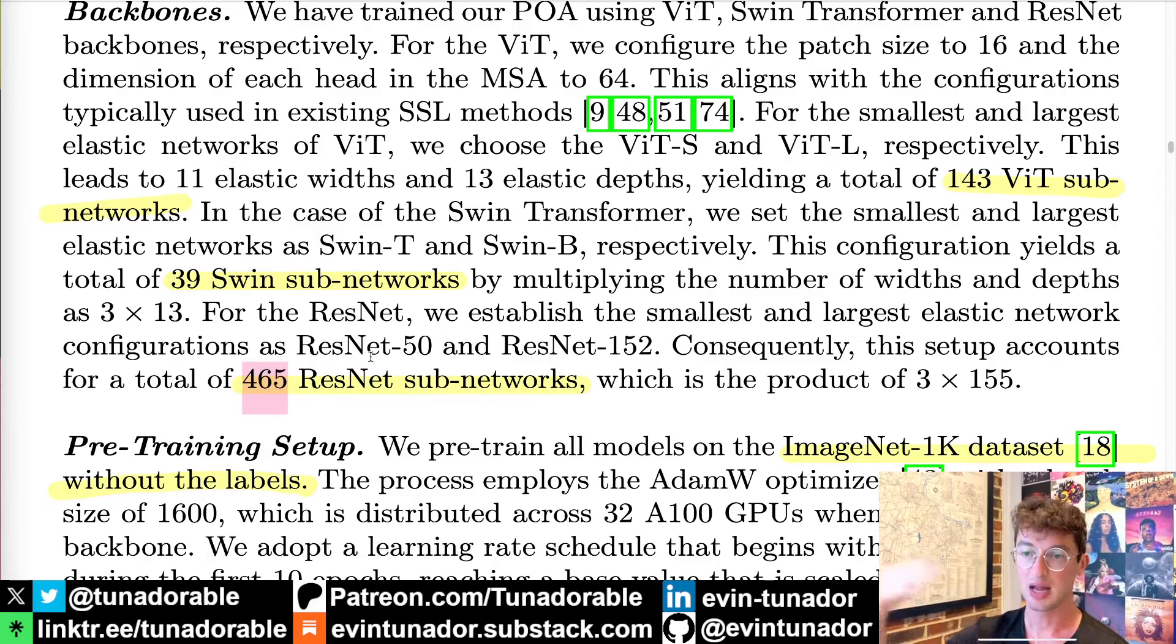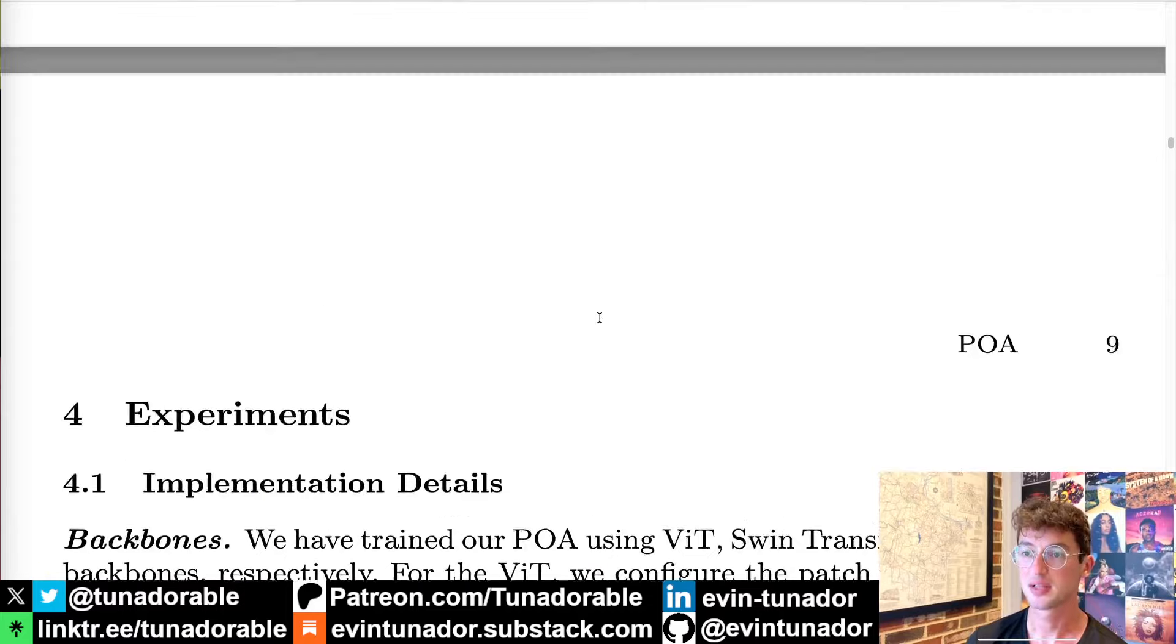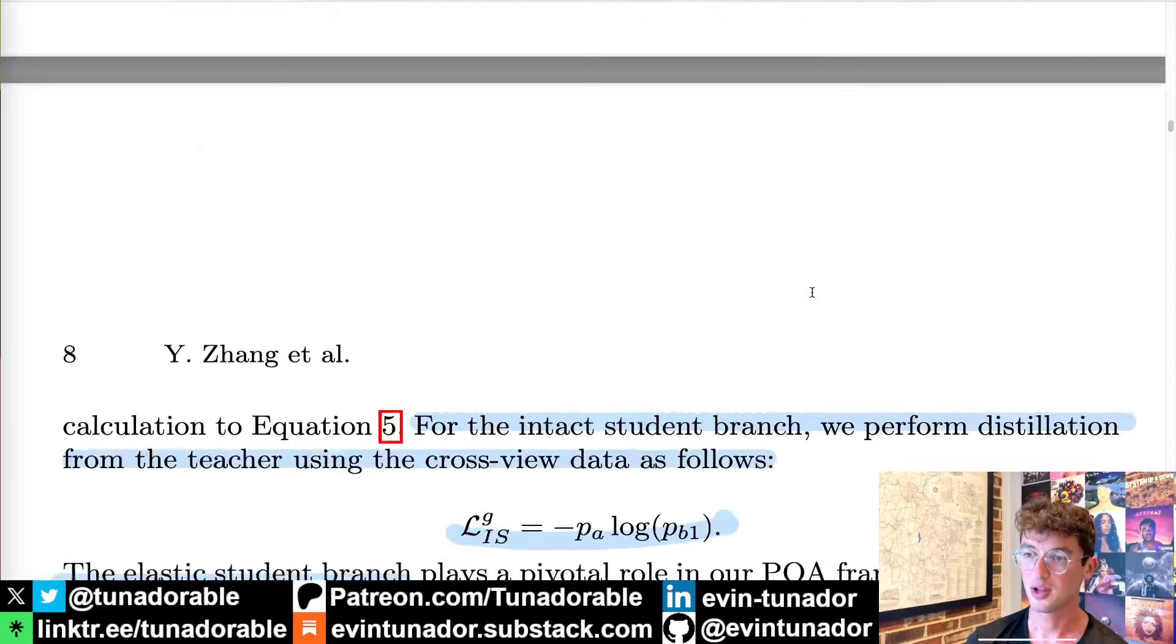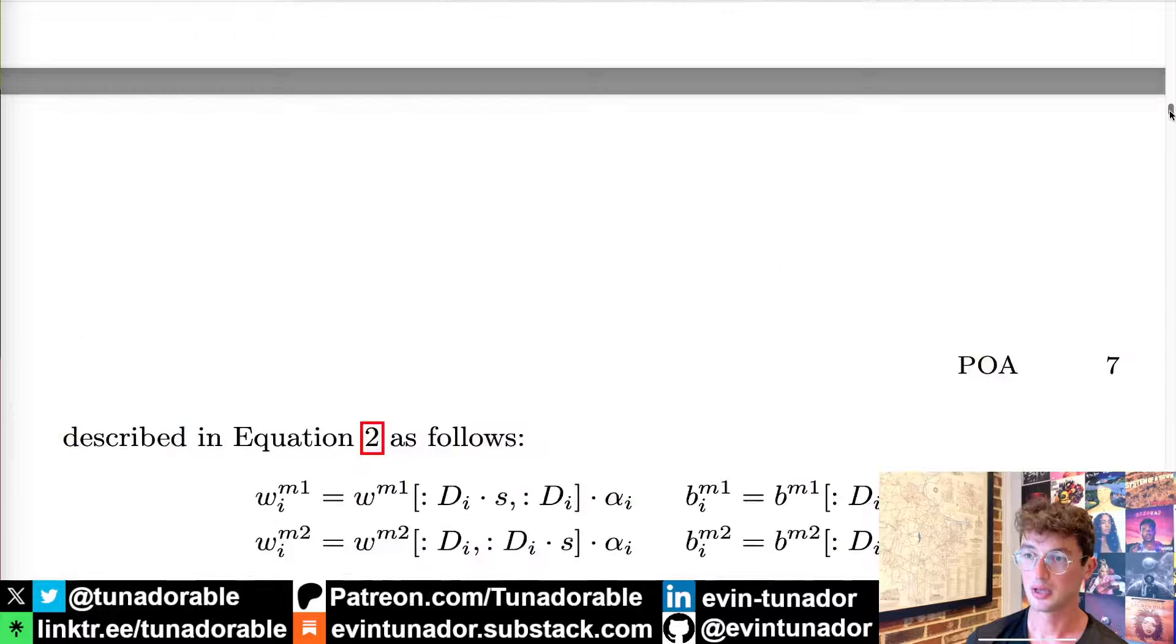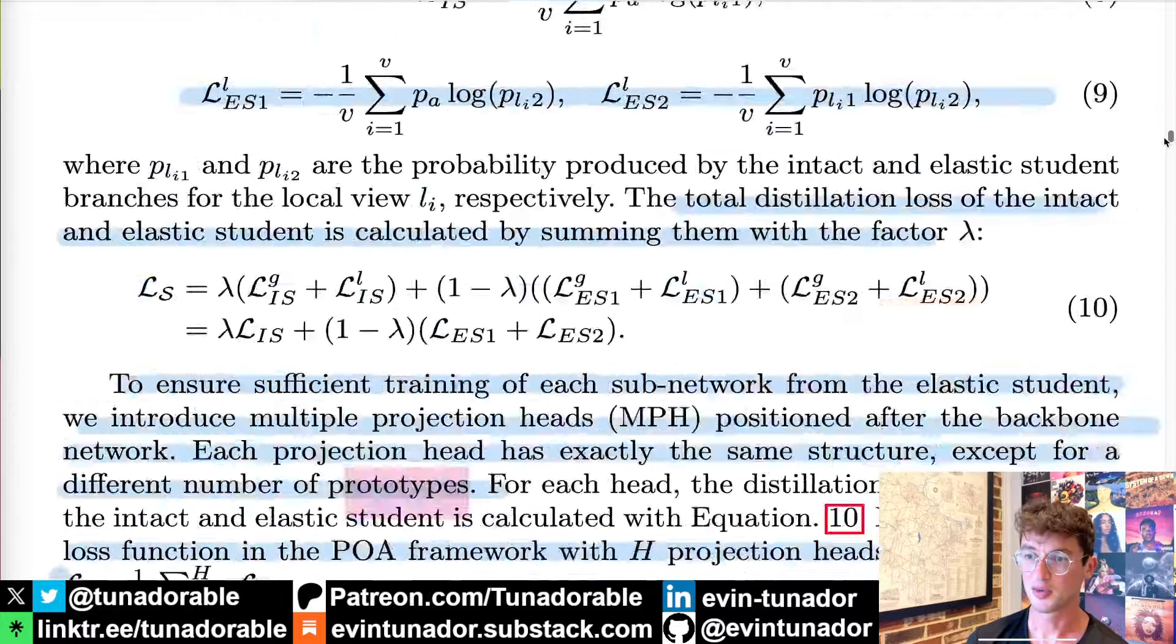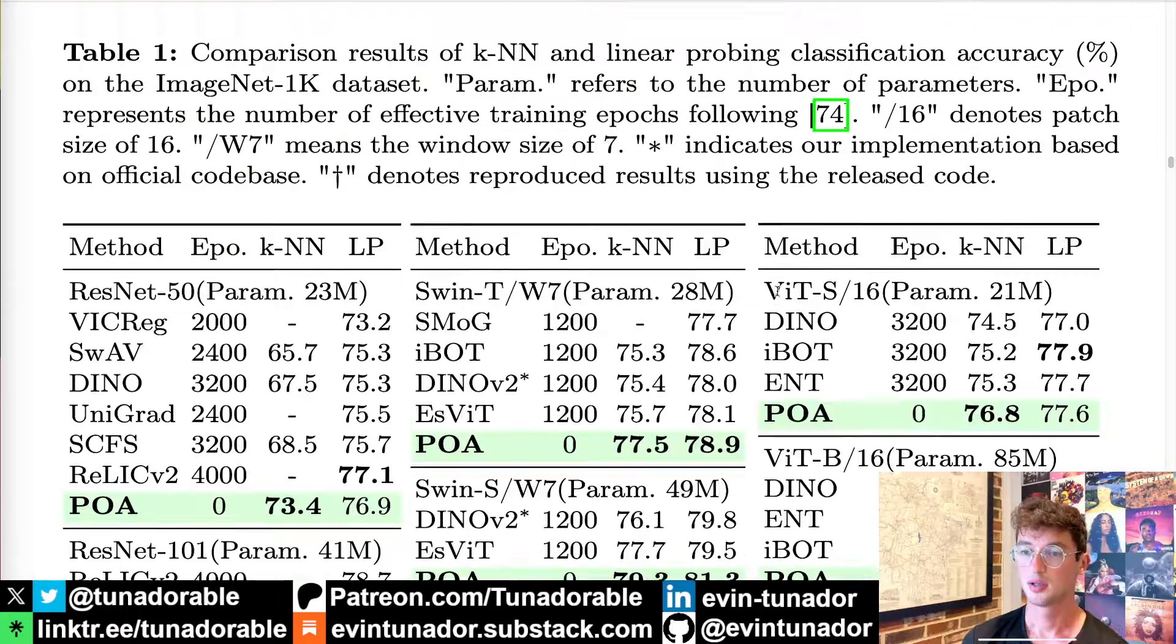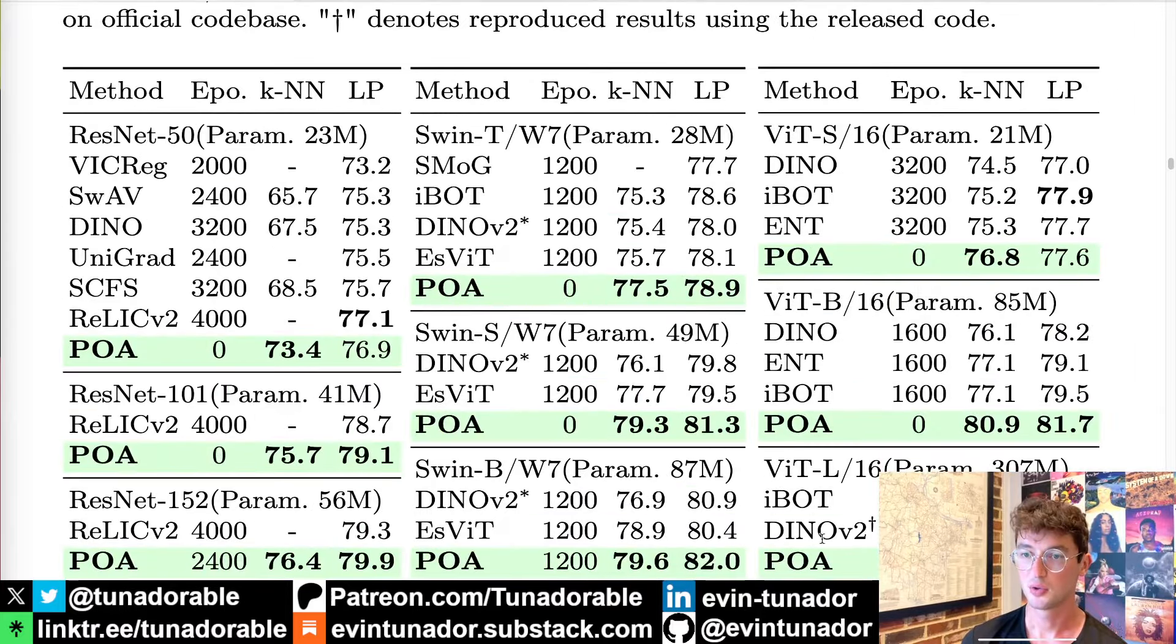The vision VIT has 143 total sub networks. The Swin transformer has 39 and the ResNet has 465. Remember those numbers are gotten from number of width dimensions to split on and number of depth layers to split on as well. They pre-train these models with ImageNet-1K without the labels. Without labels makes me think they do something weird here. Representation learning, I believe, because they were centering prototypes and things. I think the prototype idea, actually I was wrong earlier, I think it's a thing from representation image learning that I don't know very well. These are a bunch of classification accuracy metrics of some sort. Not quite sure. It seems like the POA method does do pretty consistently or somewhat consistently better than most other alternatives.